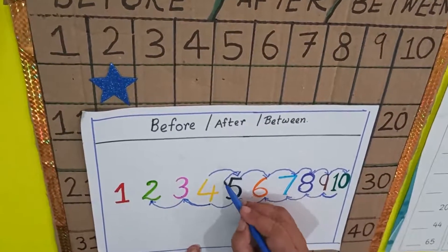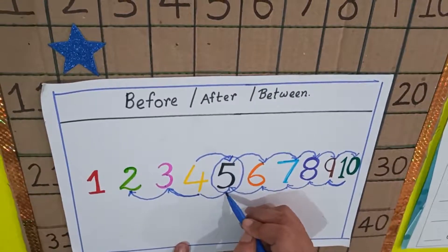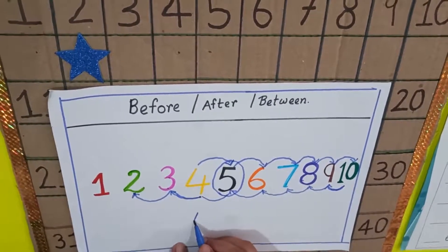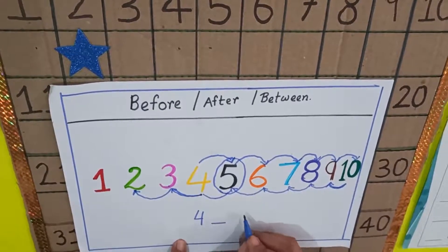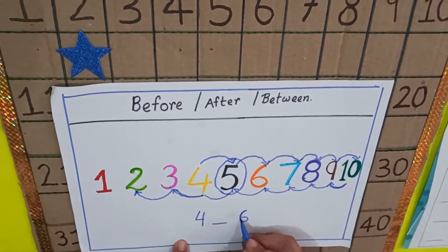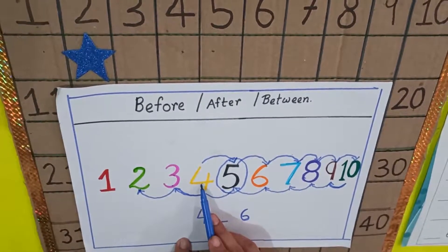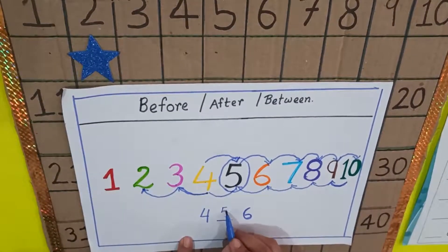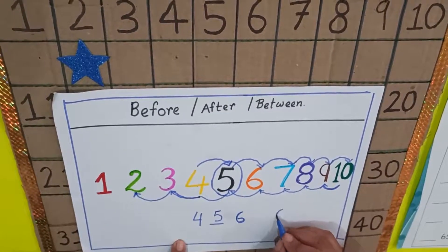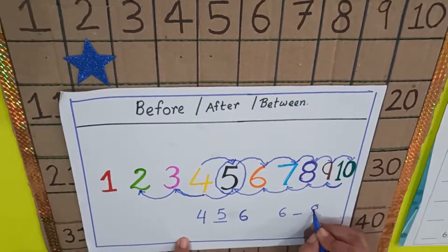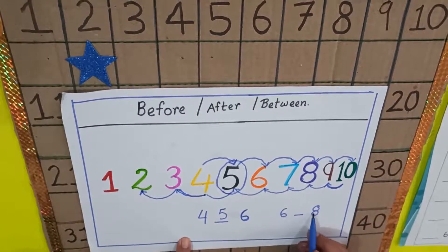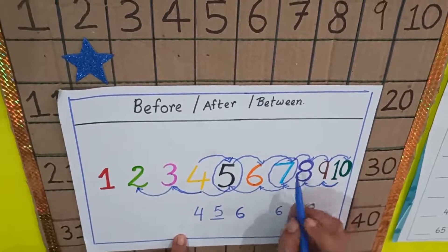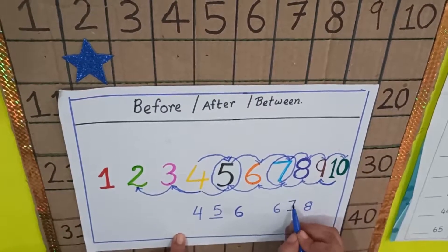Now look — this is number five. It is in between which numbers? Four and six. And can you tell me what is the between number of six and eight? Look here: six, eight — the between number of six and eight is number seven.